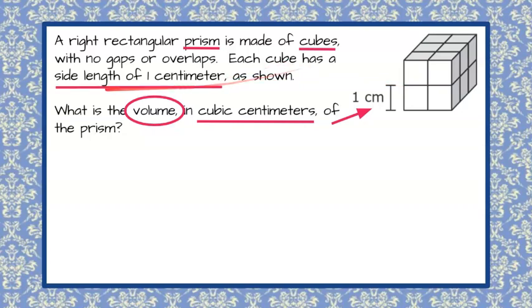And then they tell us that each cube has a side length of one and they show that here in the picture that this side length of the cube is one. When they tell us that we know that it's one by one by one. So let's look at this one here. The height is one, the length and the width are one.